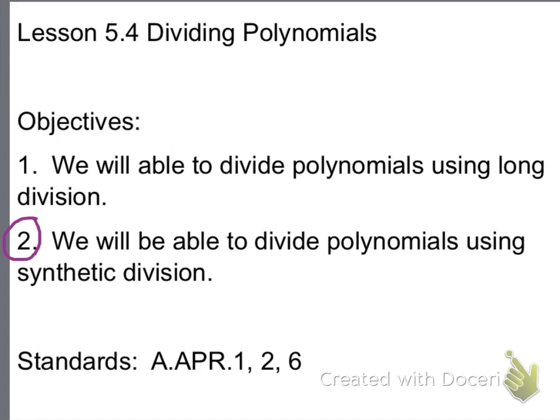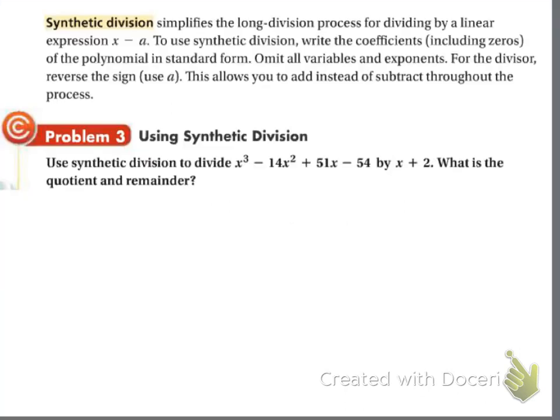Now, this is a much easier way to do things. It shouldn't take as long. Synthetic division simplifies the long division process for dividing by x minus a, which is what goes on the outside of the division sign. To use synthetic division, write the coefficients, including zeros, of the polynomial in standard form. The coefficients mean the number in front of the variable. Now this x minus a is important.